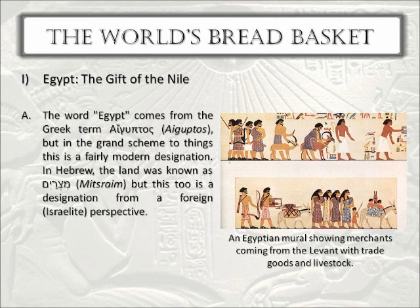The word Egypt comes from the Greek word Egyptos. From there it went into Latin, where it became more recognizable as Egyptus, and eventually into English as simply Egypt. But where the Israelites were concerned, they had a different name for Egypt — they called it Mitzrayim.